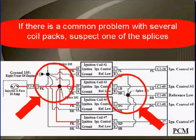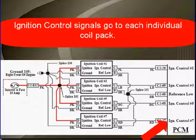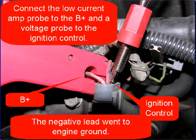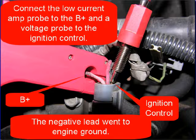Ignition control circuits go to each individual coil pack. These are the test connections: connect the low current amp probe to the B+ and the voltage probe to the ignition control. The negative lead of the scope went to the engine ground.